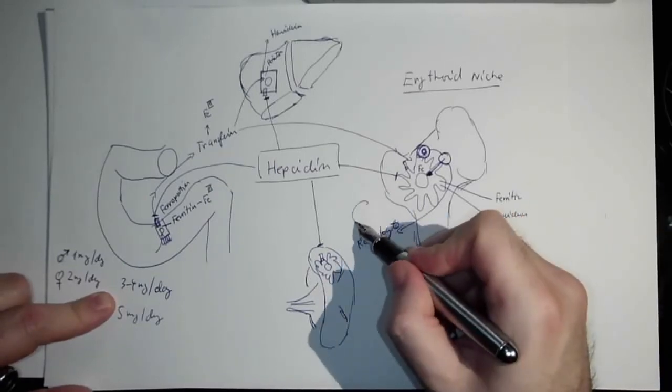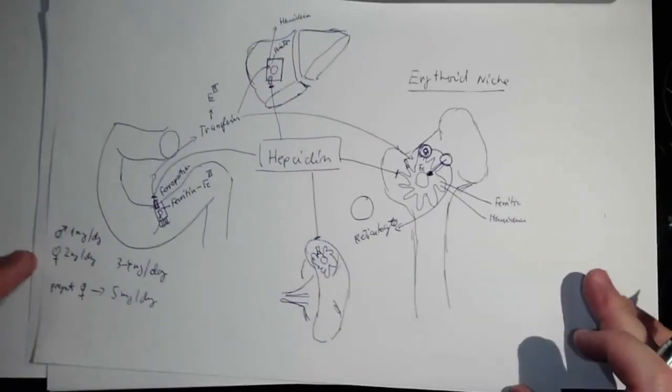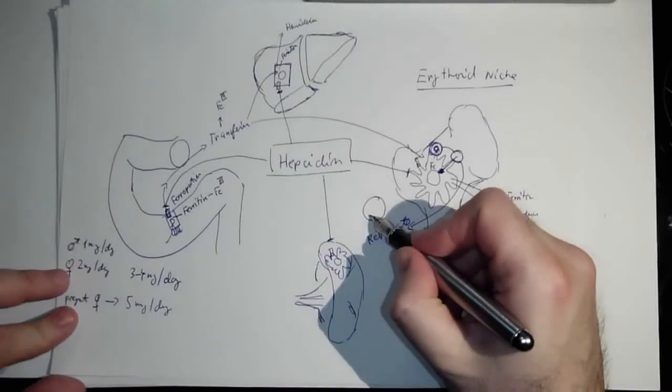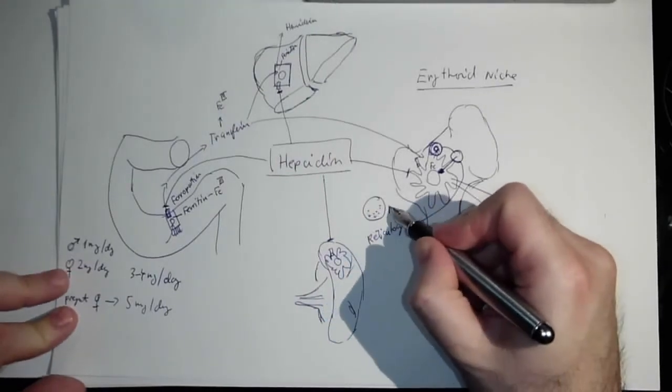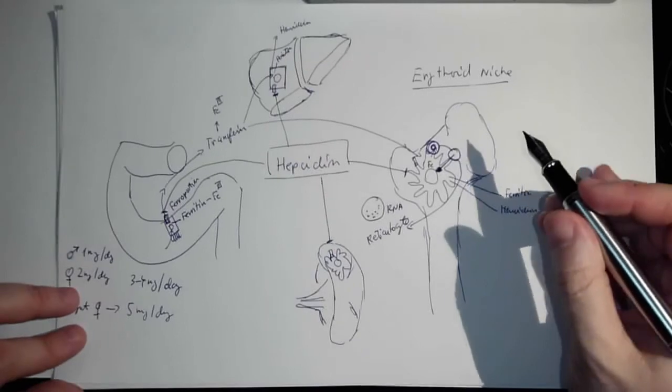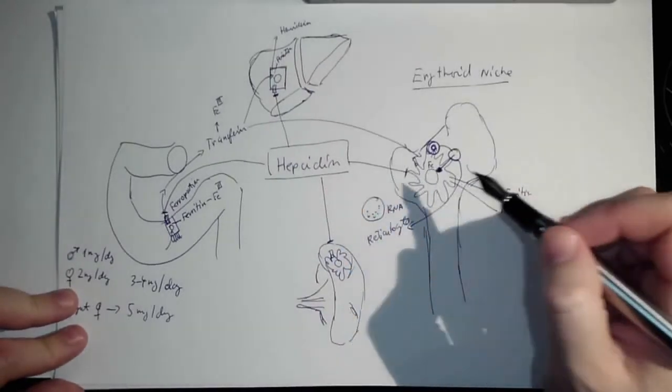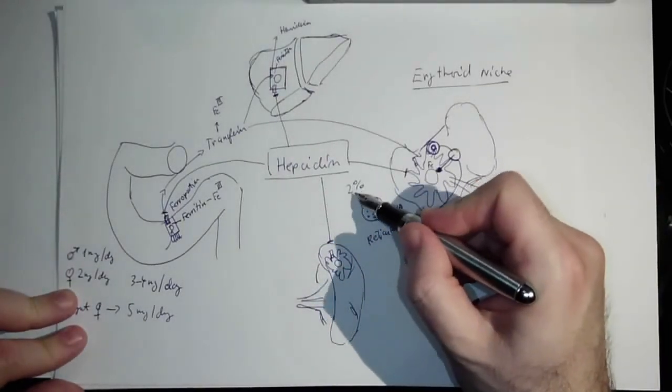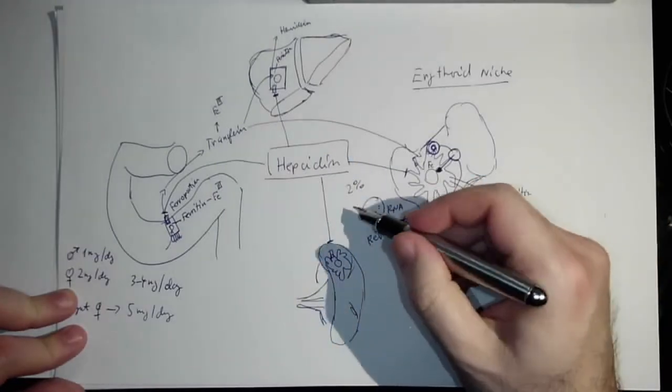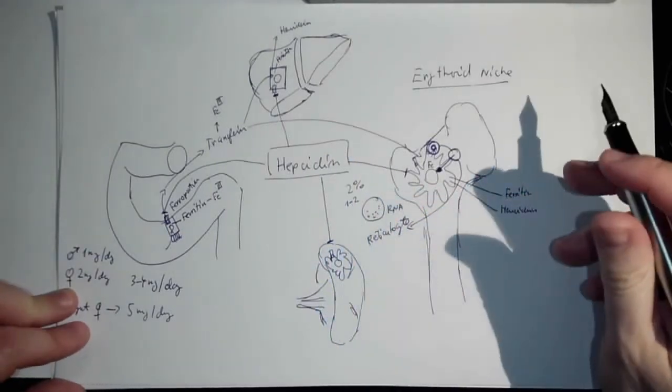Don't forget the reticulocyte—they have no nuclei, they have only pieces of RNA over here. Typically in normal peripheral blood you have like two percent of reticulocytes and they will mature in the blood in one or two days.